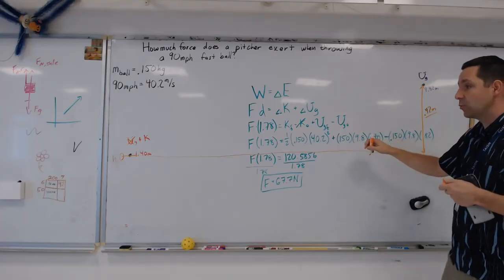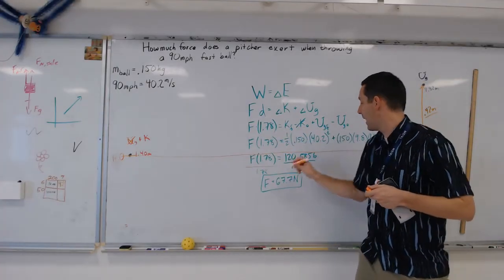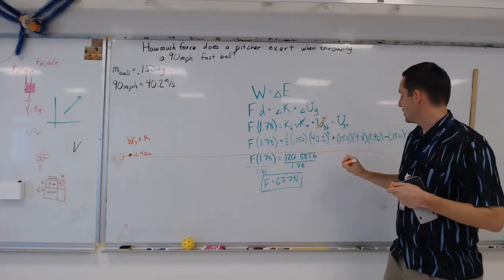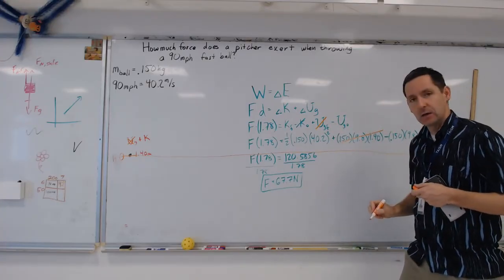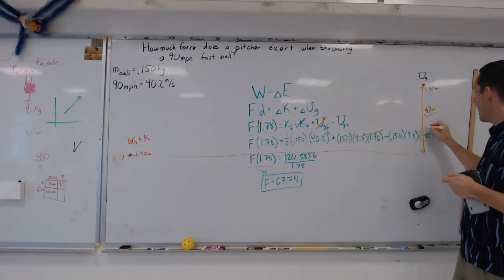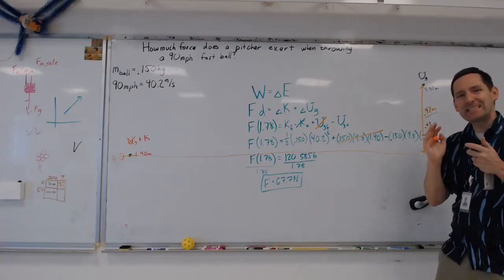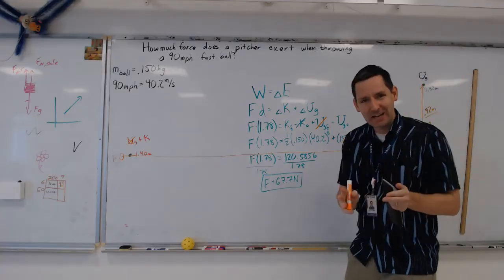So in your calculation, you could have said, my final gravitational potential energy is zero because that's at my height of zero. My initial gravitational potential energy, instead of having 1.82 here, we'd have 0.42. And we would get exactly the same answer.